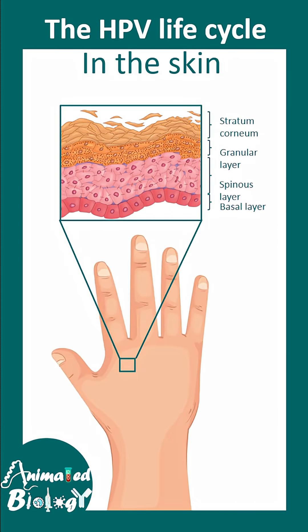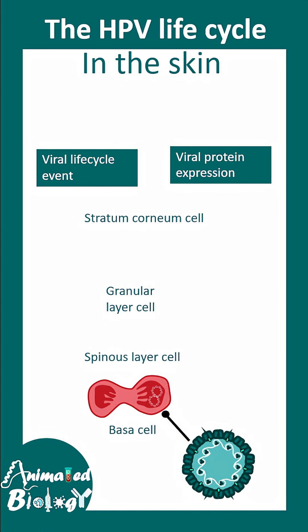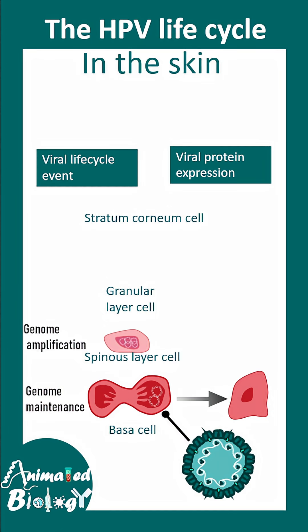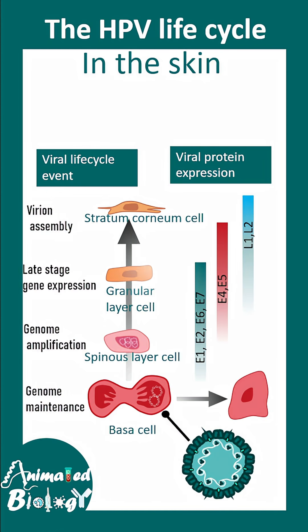Inside the skin, HPV can proliferate in different cell types. Basically, in the basal cell layer, this virus infects, and when these cells divide, in the spinous cell layer it assembles and amplifies its genome. In the granular cell layer, late-stage gene expression happens, and virion assembly and shedding occurs in the stratum corneum cell layer.